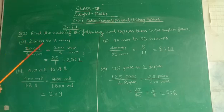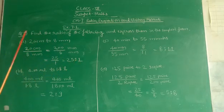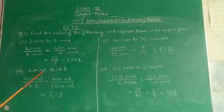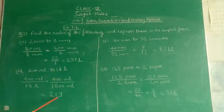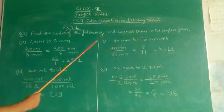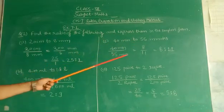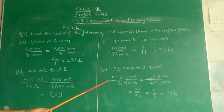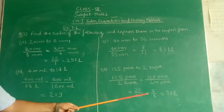First question, 20 centimeters to 8 mm, that is 25 ratio 1. 400 ml to 1.8 liter, that is 2 ratio 9. Part C is 40 minutes to 55 minutes, that is 8 ratio 11. And part D is 125 paise to 2 rupees, that is 5 ratio 8.